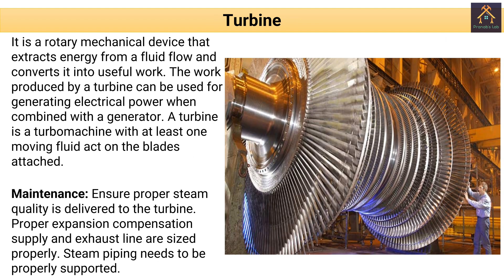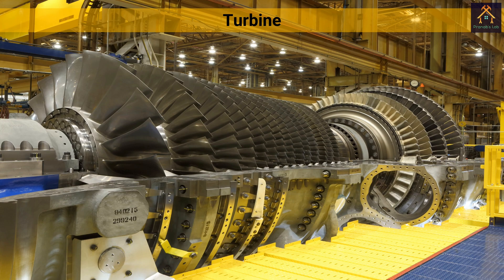Next part of the thermal power plant is the turbine. The turbine is a vital part of a thermal power plant. It is a rotary mechanical device that extracts energy from a fluid flow and converts it to useful work. The work produced by the turbine can be used for generating electrical power when combined with a generator. The maintenance of the turbine is to ensure proper steam quality is delivered to the turbine, that proper expansion compensation supply and exhaust lines are sized properly, and that steam piping is properly supported. You can see this is the turbine used in a thermal power plant.